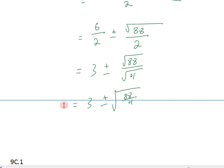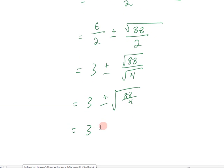88 divided by 4 is 22. And we get 3 plus or minus the square root of 22. And those are two exact answers for the angle.